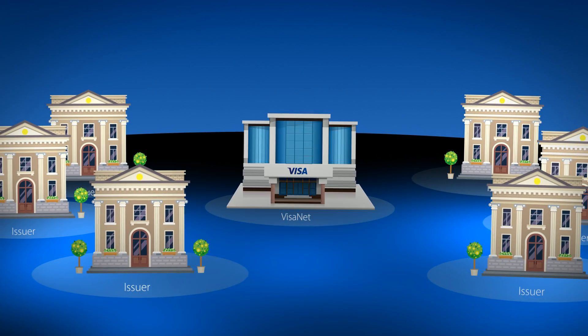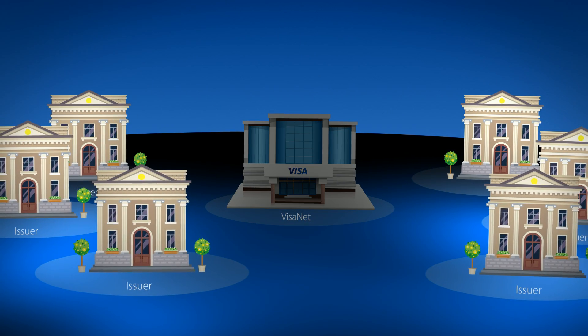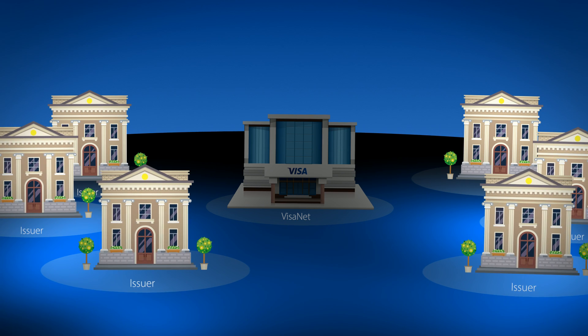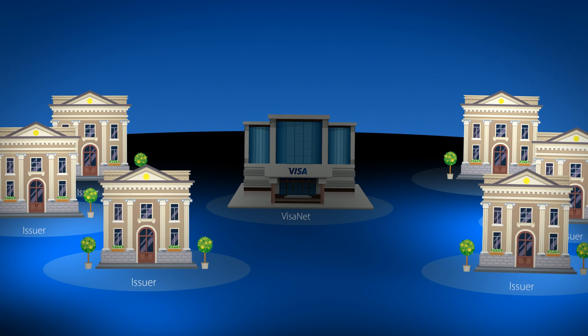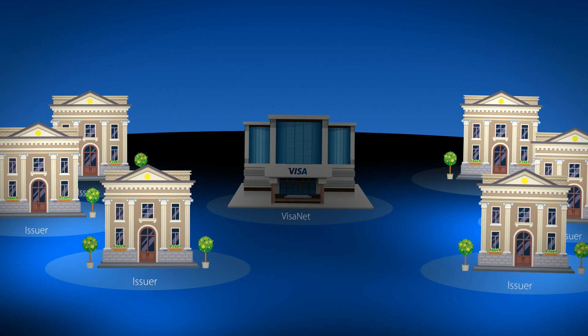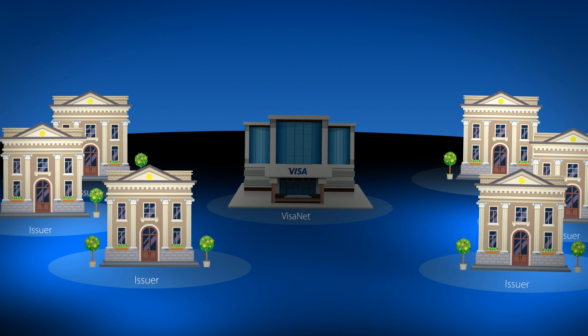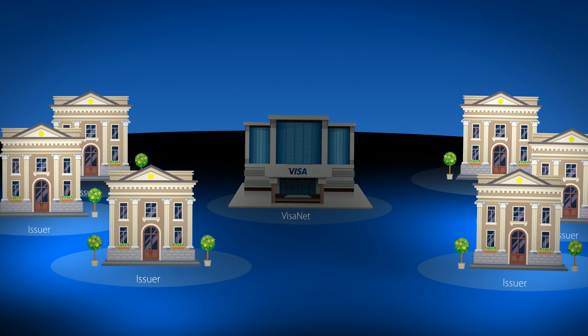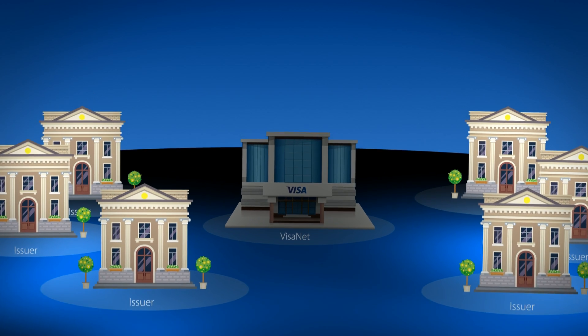VisaNet then sorts all transactions worldwide and transmits a consolidated batch file to each issuer that is participating in the network. Upon receipt of the batch file, the issuer removes the authorization hold from the consumer's account and debits the final transaction amount from their account balance. Once the clearing of the transactions has commenced, the final step of the payment process takes place.